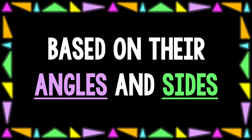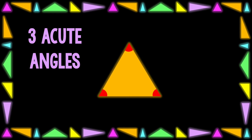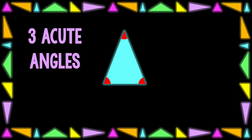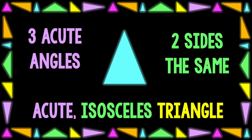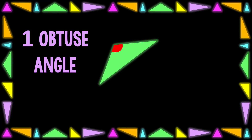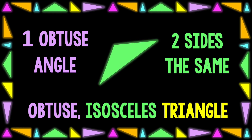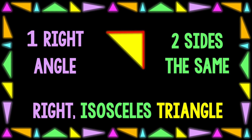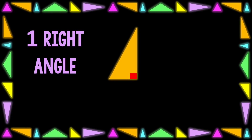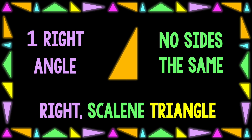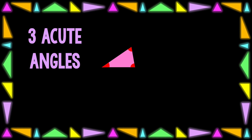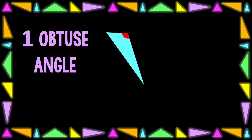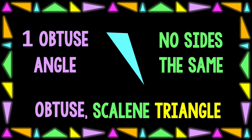Here we go! Acute equilateral triangle. Acute isosceles triangle. Obtuse isosceles triangle. Right isosceles triangle. Acute scalene triangle. Obtuse scalene triangle.